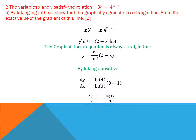Question 2 is a logarithmic question: show that the graph of Y against X is a straight line. You know that a linear equation always gives a straight line graph. We reduce the powers to linear form by taking ln on both sides. Applying logarithm rules, the power comes in front: ln Y = ln 3 equals 2 − X·ln 4. This is a linear equation, proving that the graph is a straight line.